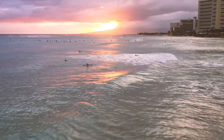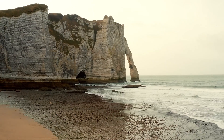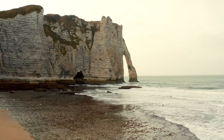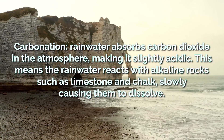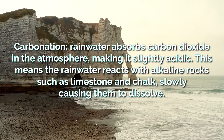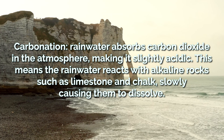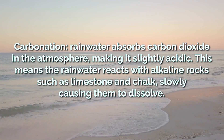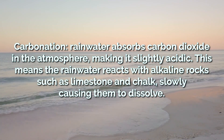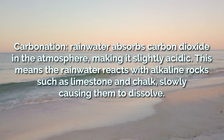Chemical weathering is caused by chemical changes and can be seen with a process known as carbonation. Rainwater absorbs carbon dioxide in the atmosphere, making it slightly acidic. This means the rainwater reacts with alkaline rocks such as limestone and chalk, slowly causing them to dissolve.